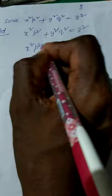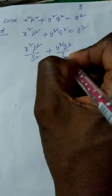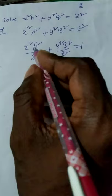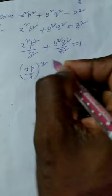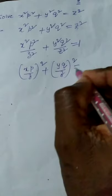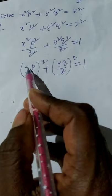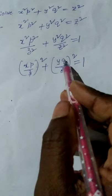We divide by z² on both sides: x²p²/z² + y²q²/z² = 1. Writing this as powers of p and q, we get (xp/z)² + (yq/z)² = 1. If we merge x and z in p, and y and z in q, then xp/z is changed to capital P and yq/z is changed to capital Q. That means P² + Q² = 1, which belongs to standard form 1.